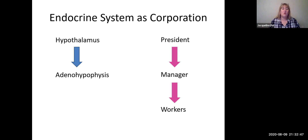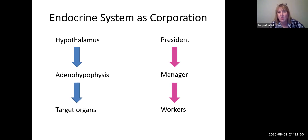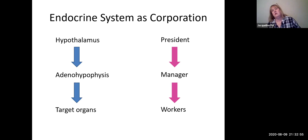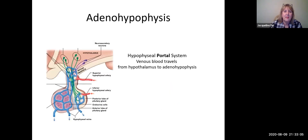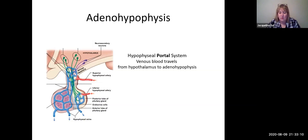The adenohypophysis secretes hormones, and those hormones go to distant tissues and organs — those are the workers. Some of them will even pass the work on to unpaid interns, so there could be a fourth layer going on. If you understand how business works, you can understand the endocrine system.